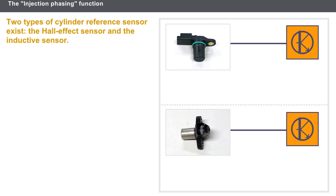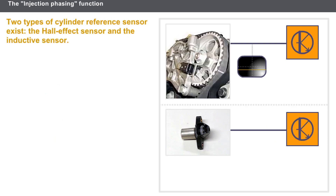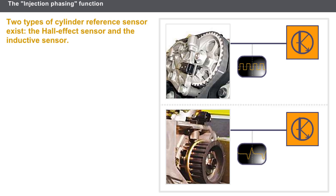There are two types of cylinder reference sensor. The Hall effect sensor transmits a square pulse signal corresponding to the shape of the target, which may contain one or several raised sections. The inductive sensor transmits a signal corresponding to the shape of the target, which has several teeth. In both cases, the target is integral with the camshaft.